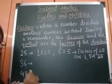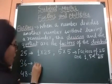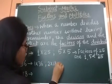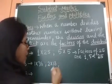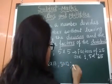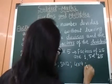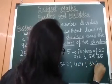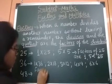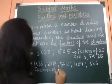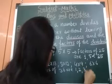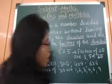Now come to 36. We can write 36 as: 1 into 36, 2 into 18, 3 into 12, 4 into 9, and 6 into 6. So the factors of 36 are 1, 2, 3, 4, 6, 9, 12, 18, and 36.